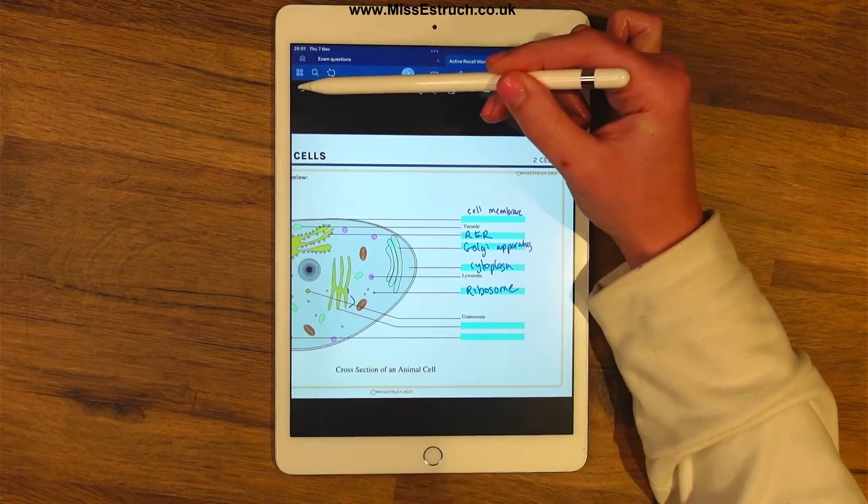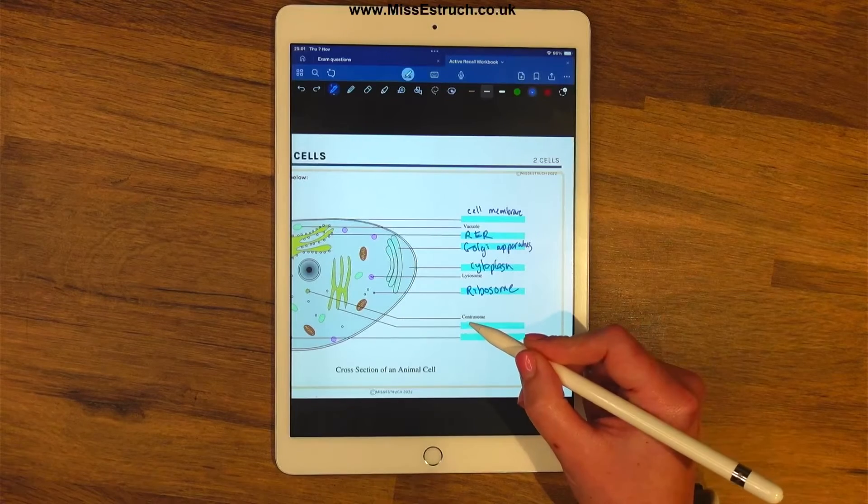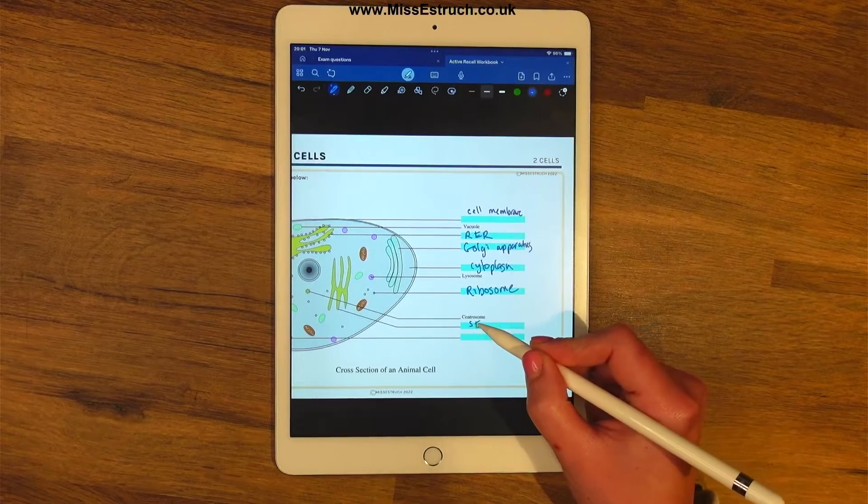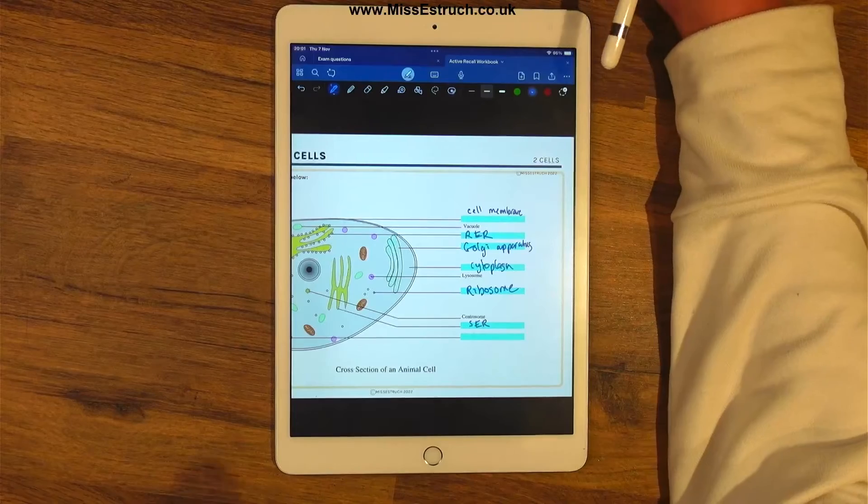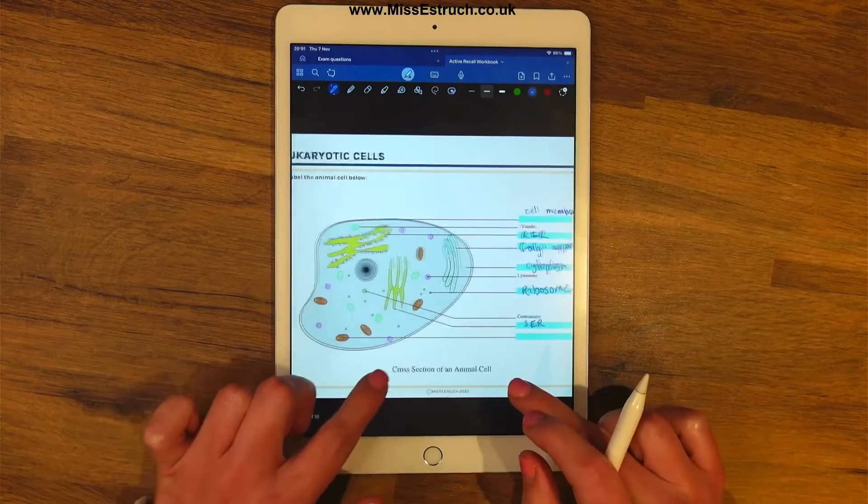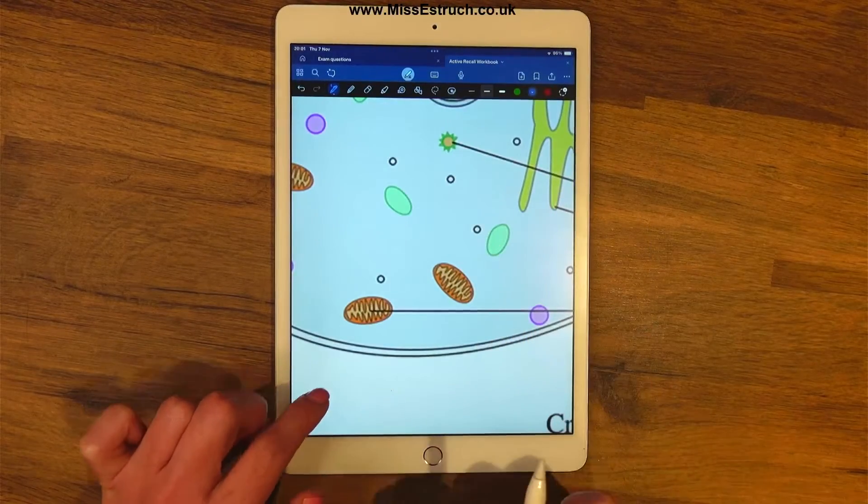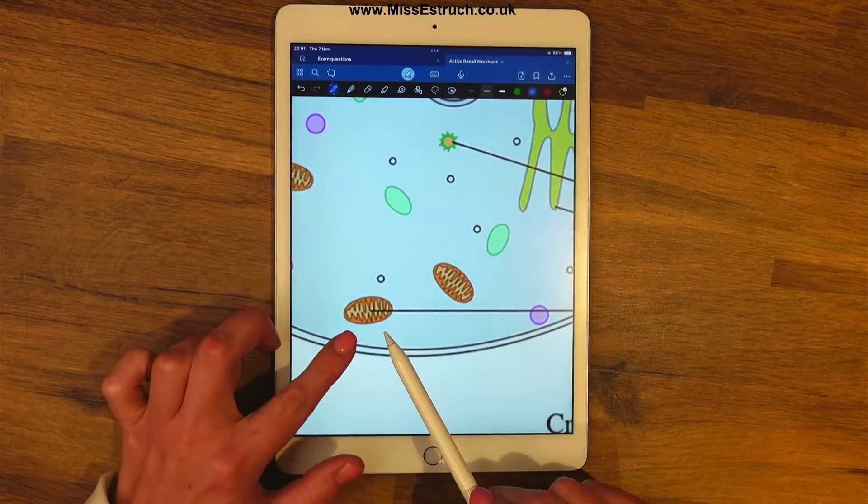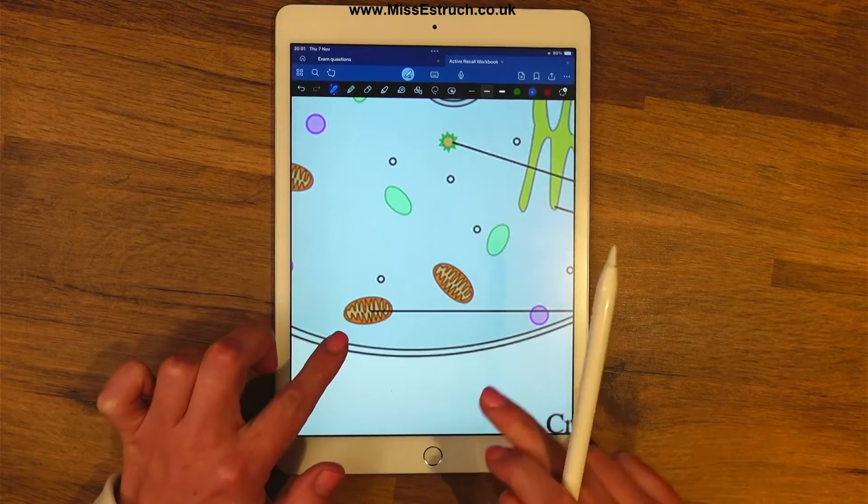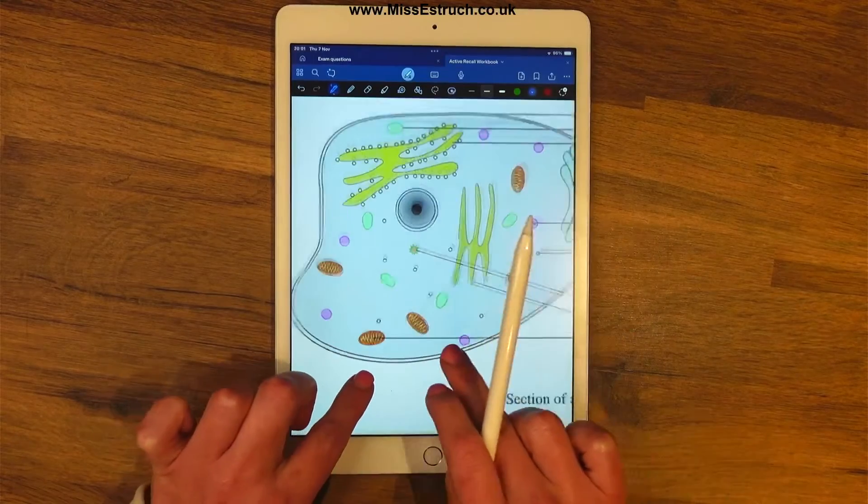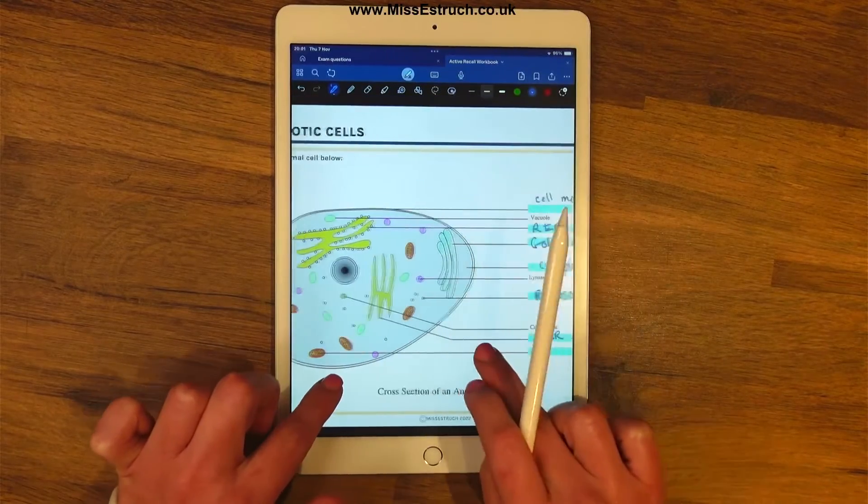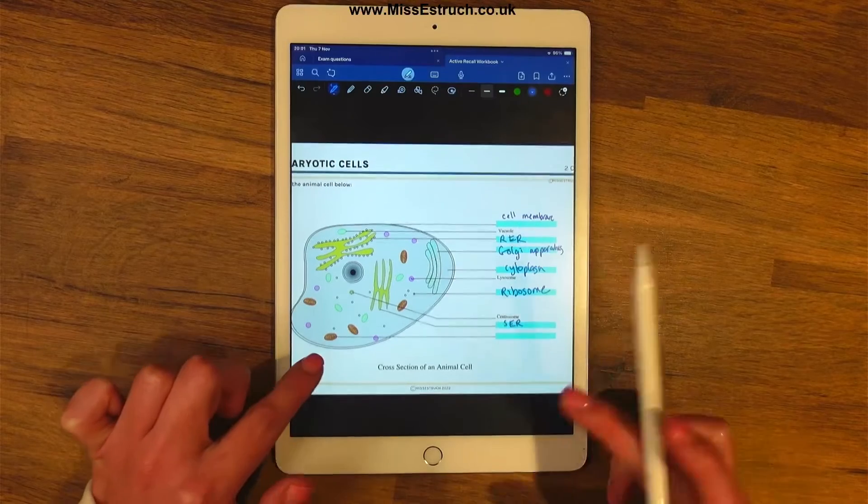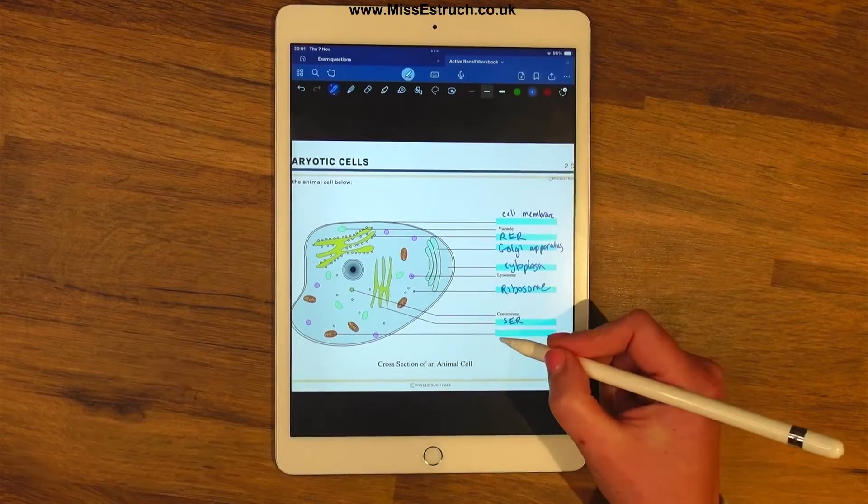Next is this label pointing at this structure where we have these folded membranes but they don't have any ribosomes on the outside. So that would be our smooth endoplasmic reticulum or the SER. Last label we have, probably my favorite organelle, this one. What's your favorite organelle? Let me know in the comments. But this one's going to be my one, the mitochondria.